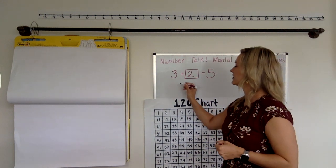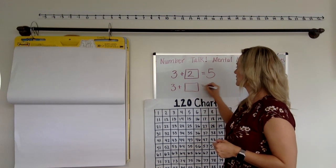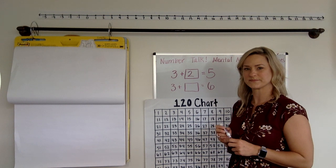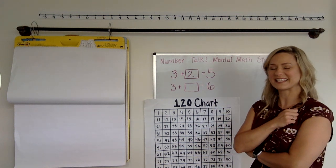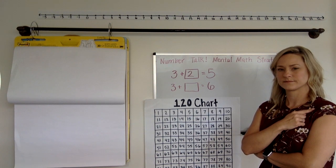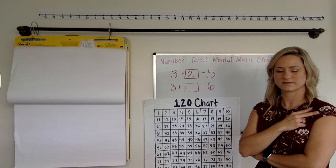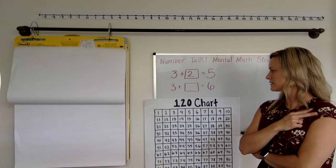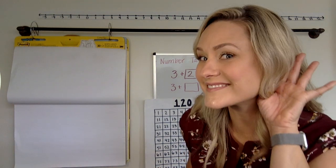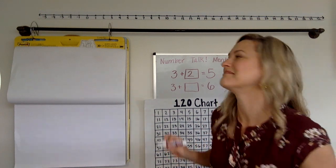3 plus one equals 6. Take some time to think. 1, 2, 3. On the count of 3. Are you ready? 1, 2, 3. Tell me. I think you said 3. Did you say 3? Okay. Tell me in the comments if you said 3. Give me a thumbs up.